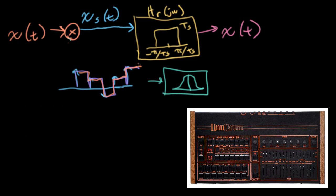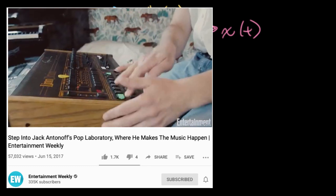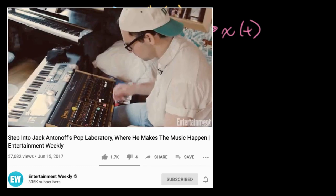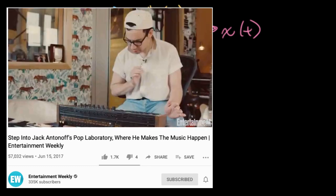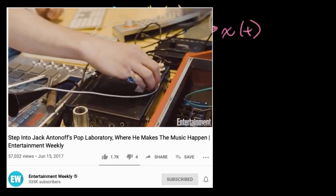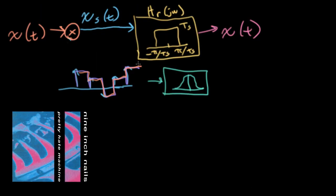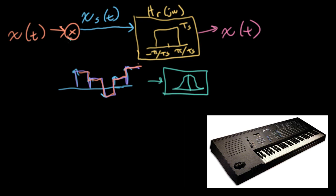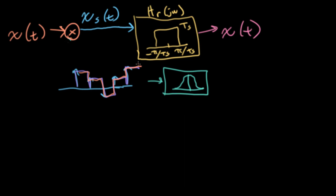Those sounds are also used nowadays by a lot of modern producers, like Jack Antonoff from Bleachers, who's produced Taylor Swift and Lorde, among others. And if you listen to the first Nine Inch Nails album, Pretty Hate Machine, a good portion of the grunginess of those sounds is the EMU Emulator sampler playing sounds that were pitched way down and had these weird sharp transitions in their waveforms.